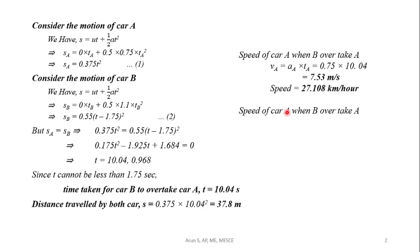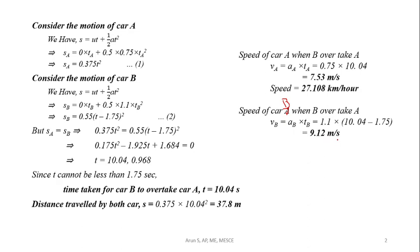Now we find the speed of car B when B overtakes A. V_B = A_B × T_B, where A_B = 1.1 and T_B = T − 1.75 = 10.04 − 1.75 = 8.29 seconds. Substituting: V_B = 1.1 × 8.29 = 9.12 metres per second, which equals 32.832 km/h.